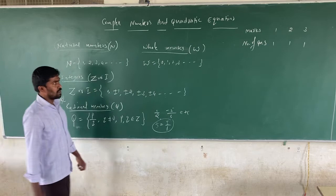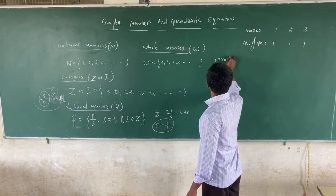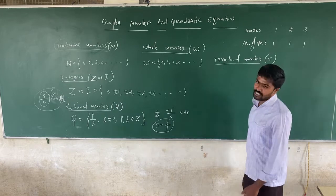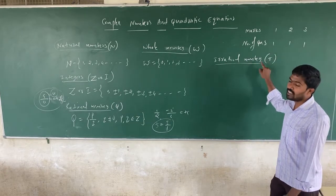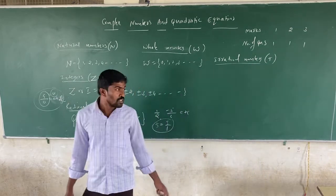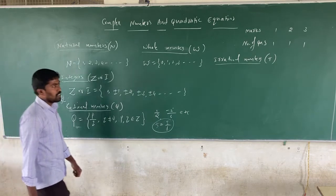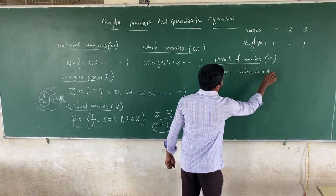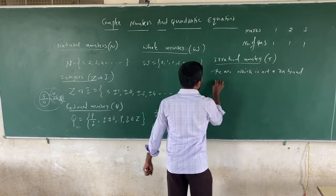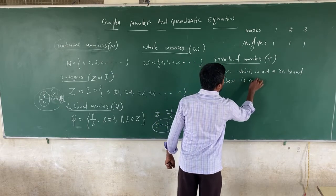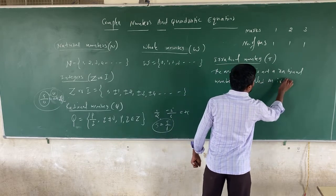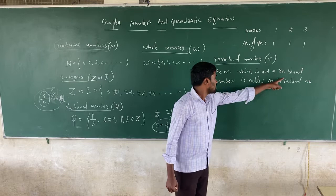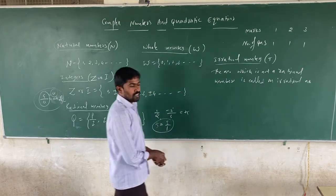Next, let's talk about Irrational Numbers. The representation of irrational numbers is T. The number which is not a rational number is called an irrational number.